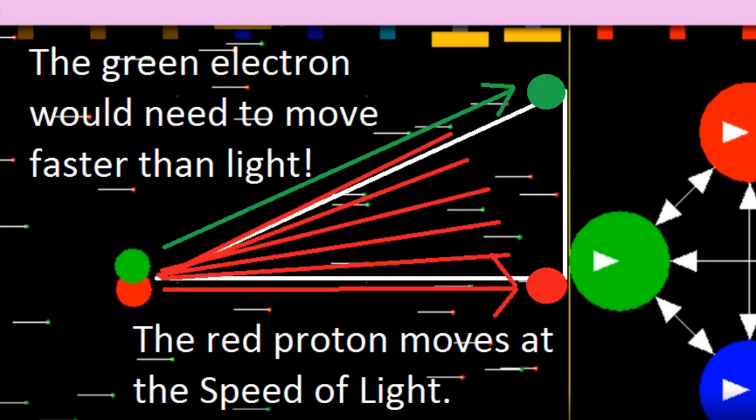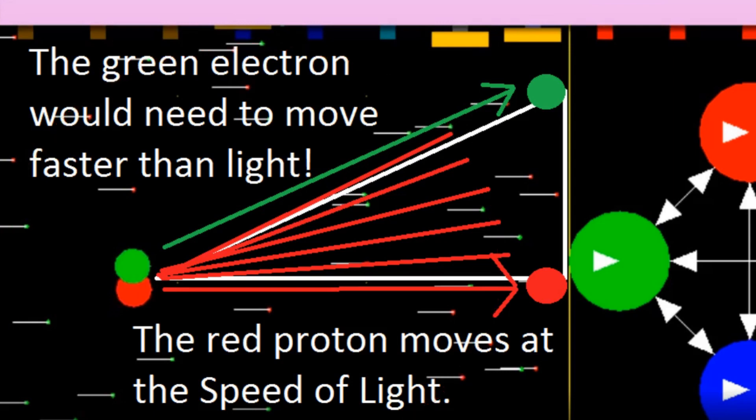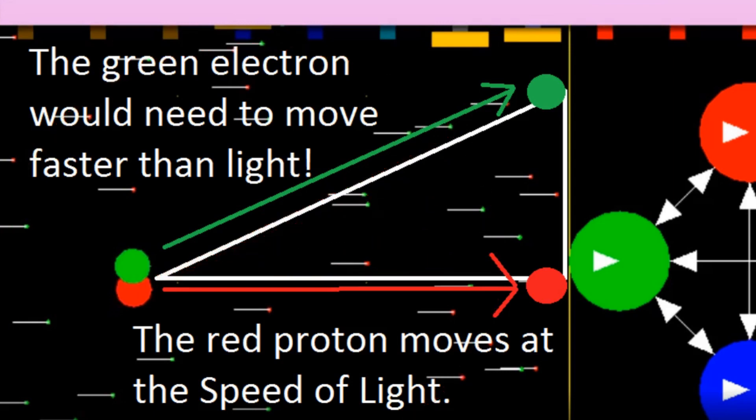No electron can orbit around a proton moving at the speed of light, or else that electron would need to move faster than the speed of light. So all chemical interactions freeze. Nothing ages. No clocks can tick. Time is frozen.